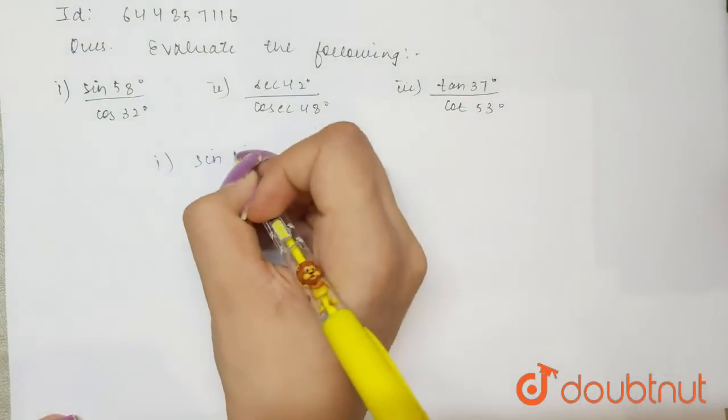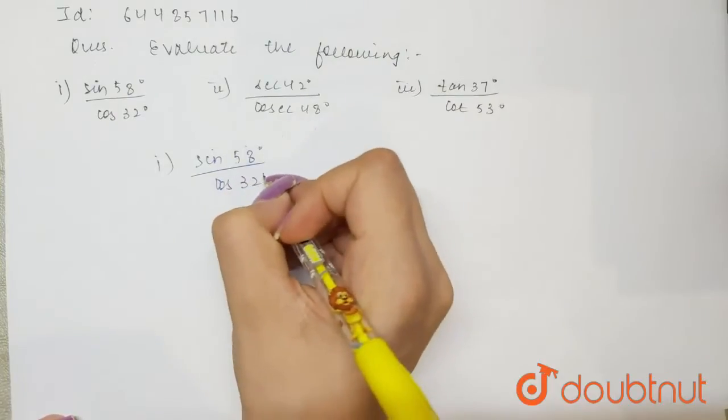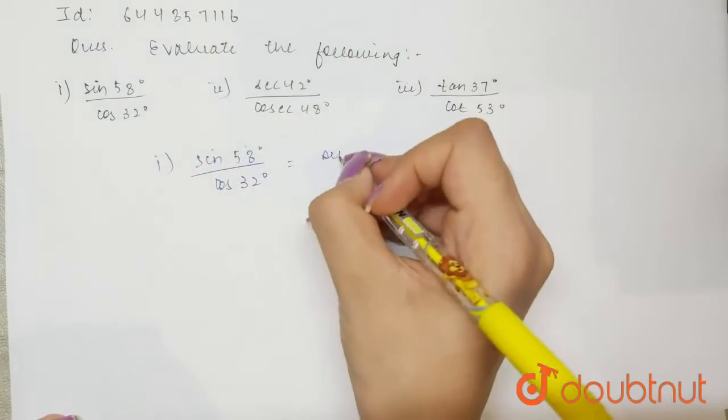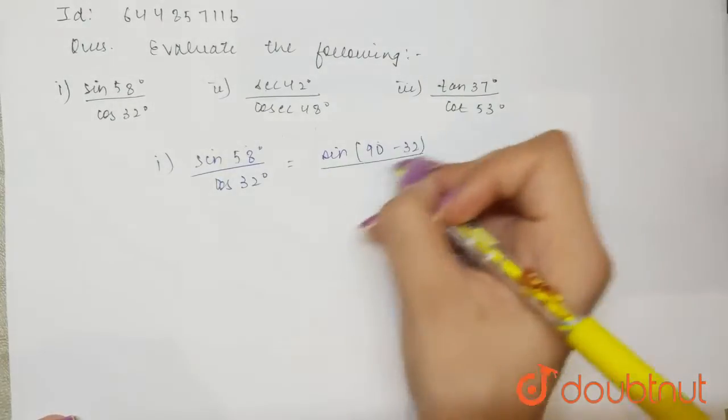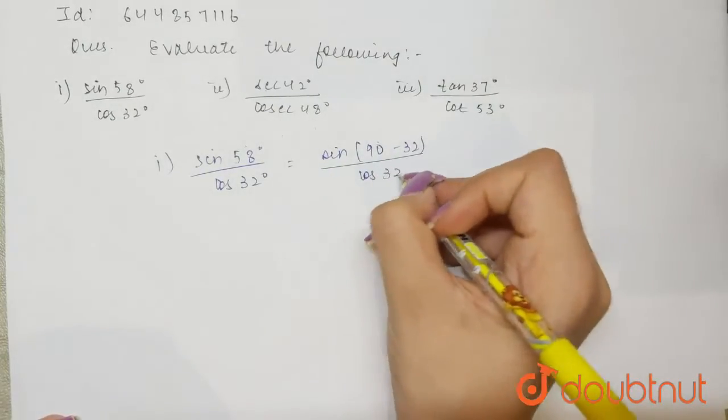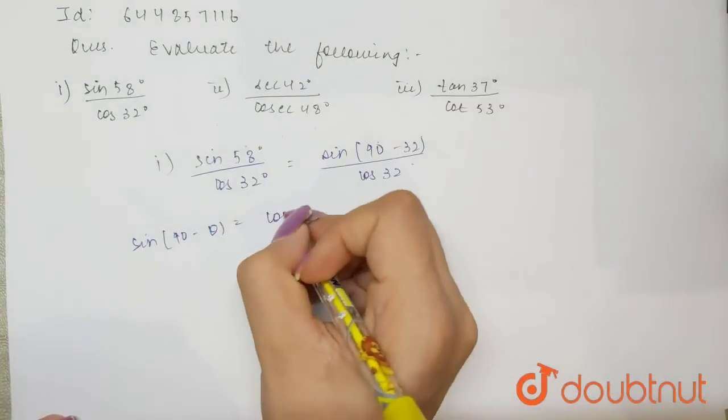let's start. Sine 58° divided by cosine 32°. Now we can write 58 as 90 minus 32, and this will be cosine 32. We know that sine of (90 - θ) equals cosine θ, so I can write this as cosine 32° divided by cosine 32°. This will cancel and we